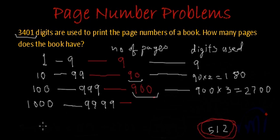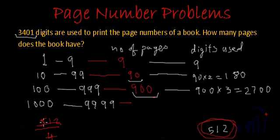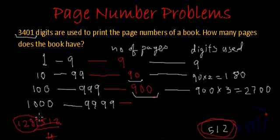Now we find how many 4-digit page numbers we can print using these 512 remaining digits. We divide 512 by 4, since each 4-digit page number uses 4 digits. 512 divided by 4 equals 128. So we are printing 128 pages using these 512 leftover digits.